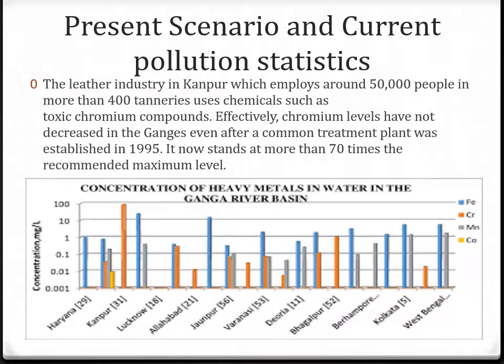The leather industry in Kanpur, which employs around 50,000 people in more than 400 tanneries, uses chemicals such as toxic chromium compounds. Here we have a graph showing you the concentration of heavy metals with cities. In Kanpur, the concentration of chromium is the highest. In Lucknow, the concentration of iron is the highest.